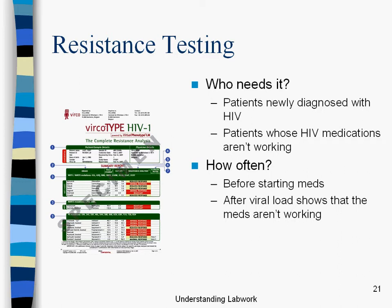Someone starts meds and we would expect their viral load to go down, because the point of the medication is to interfere with HIV's life cycle. If the virus can live and continue its life cycle even when there's medication in the bloodstream, then that virus is known as HIV resistant virus. We would want to try to find another med — that's a great way to use the resistance test.